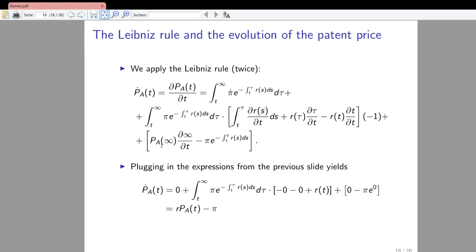Adding the remaining Leibniz terms: the integrand evaluated at the upper bound infinity times the derivative of infinity with respect to t, minus the integrand evaluated at the lower bound t — that is, pi times the discount factor. Now the first term involving the time derivative of operating profits equals zero by our earlier result, so that term drops out.